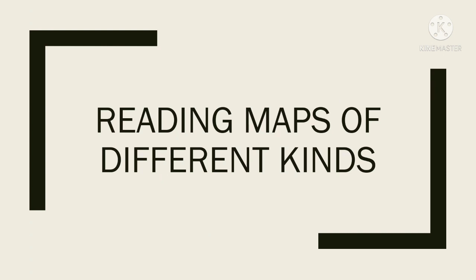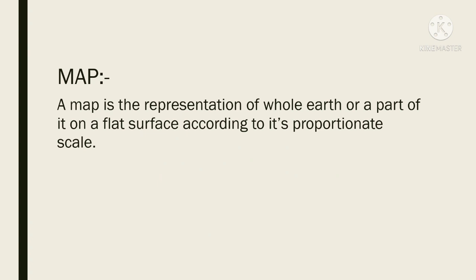What is a map? A map is the representation of whole earth or a part of it on a flat surface according to its proportionate scale.